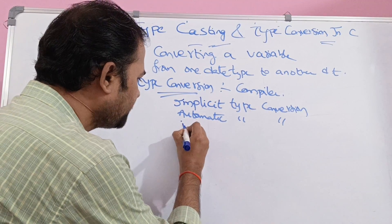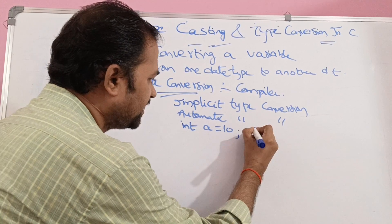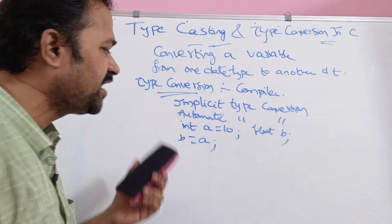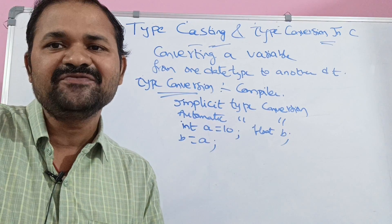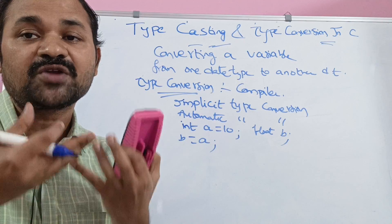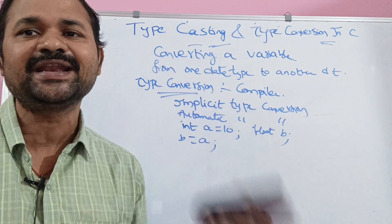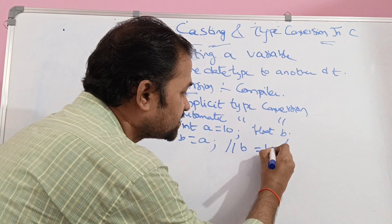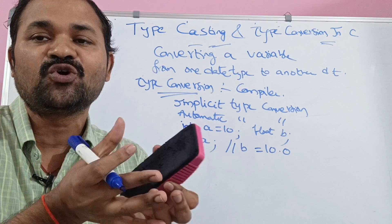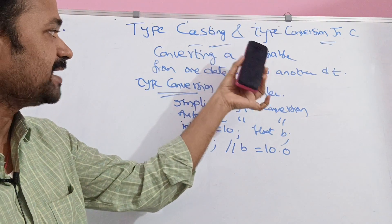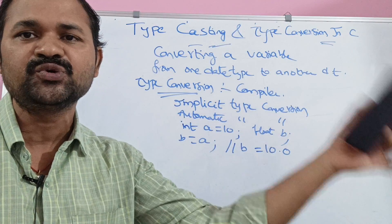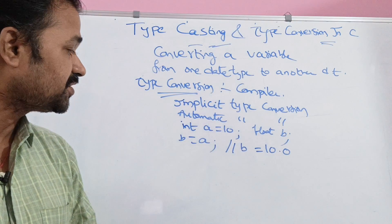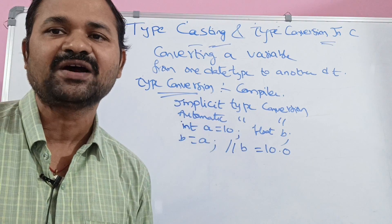For example, let's say we have int a = 10, and float b = a. We are converting the integer value 10 into the floating point value 10.0. Now b becomes 10.0, which is a floating point value. So this is type conversion — converting a variable from integer to floating data type. If you print b, the output will be 10.0.